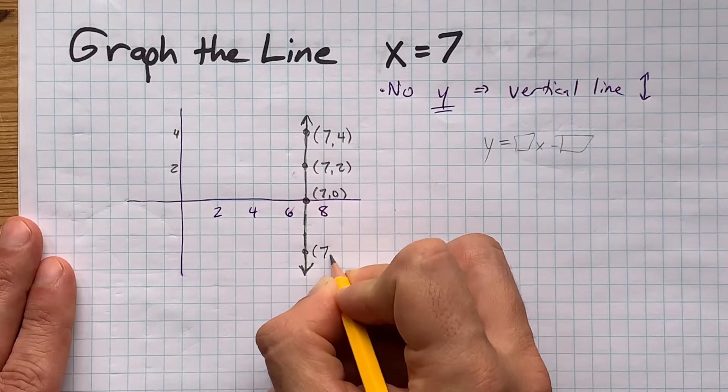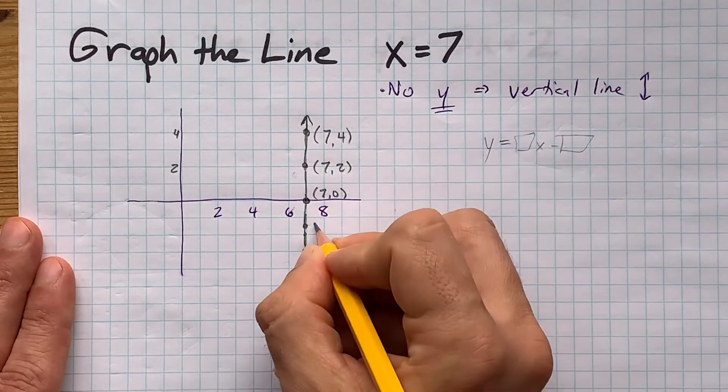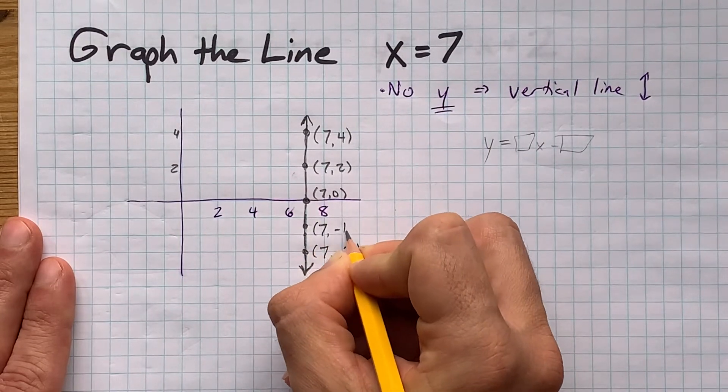This point here is (7, negative 3). And there's some here at the decimal values too that I'm not showing you - maybe (7, negative 1.5).